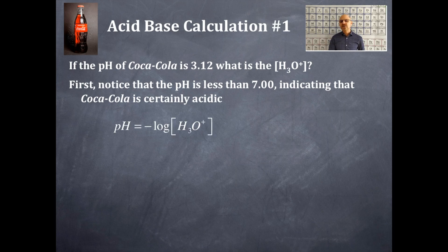So pH is equal to the negative log of the hydrogen or hydronium ion concentration. We're going to rearrange this just a bit here. And we got log of hydronium ion concentration is equal to the negative pH.